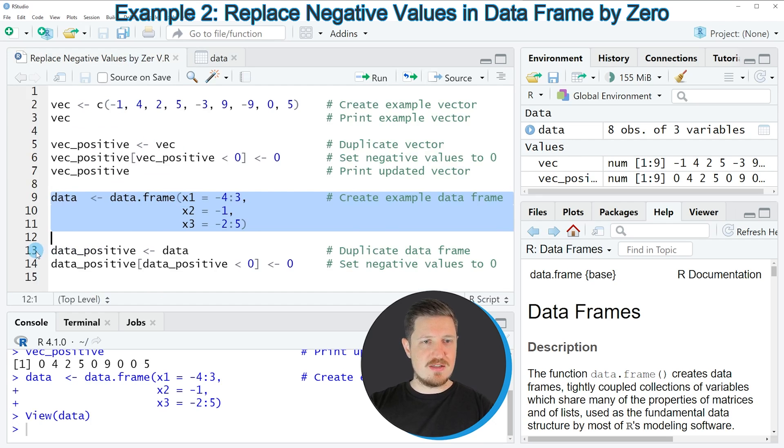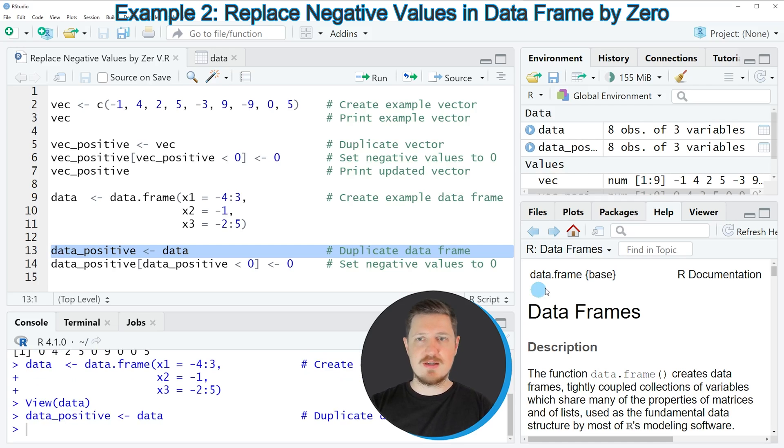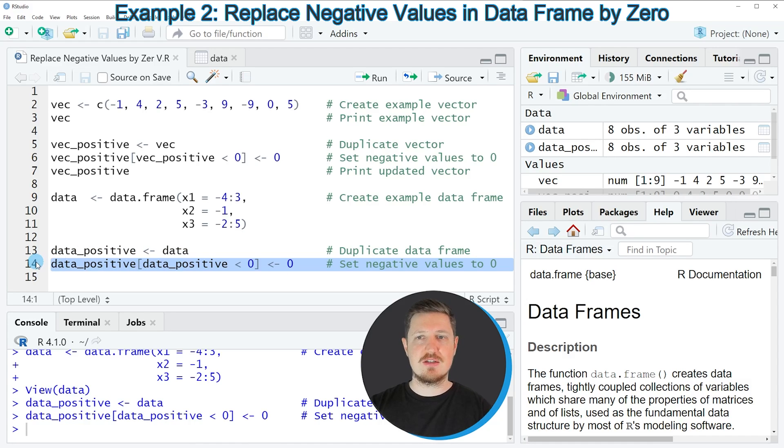Then we can apply the code that you can see in lines 13 and 14. As in the first example I am first duplicating our data as you can see in line 13 of the code. After running this line of code another data frame object is appearing at the top right which is called data positive. Then in line 14 of the code I am again using a logical condition to replace the negative values by the value zero. If you run line 14 of the code our new data frame is updated as you can see by clicking on the data frame object at the top right in the workspace.